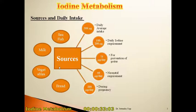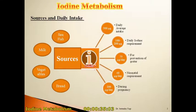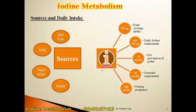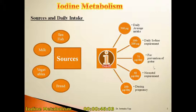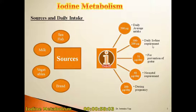Iodine is absorbed in our body in the form of iodide ion. The daily average intake of iodine varies according to different physiological states and age groups. For a normal adult, the daily average intake is around 500 micrograms per day, while the daily iodine requirement for the body is at least 100 to 200 micrograms per day.